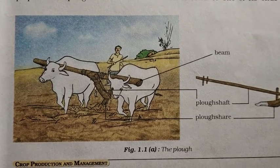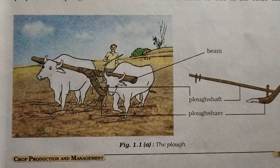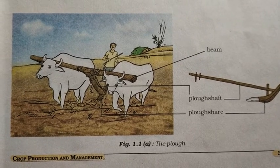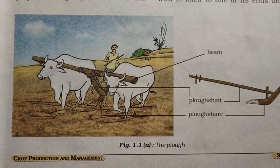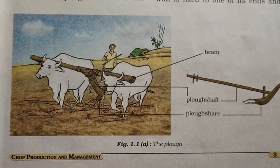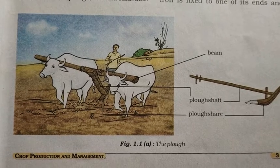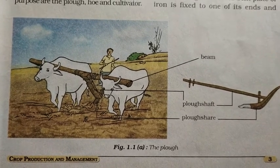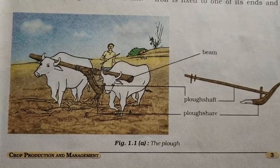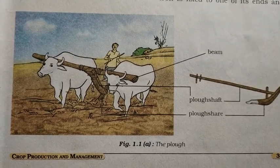Hi students, welcome to NIRS Education. As we are discussing the lesson crop production and management, in the previous class we already saw the meaning of crop and why we grow different types of crops based on different seasons. Depending on the season, crops are divided into two groups: Kharif crops, grown in the rainy season, and Rabi crops, grown in the winter season.